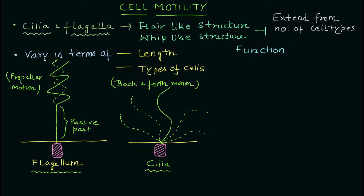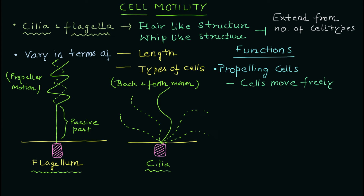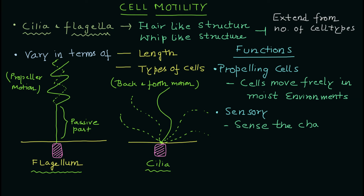The motion of cilia is a back-and-forth motion. Beyond cell motility, these structures serve additional functions. The first function is propelling cells — cilia and flagella are useful in moving cells freely in moist or aqueous environments. The second important function is the sensory function, where they sense changes in the surrounding environment, whether physical or chemical.